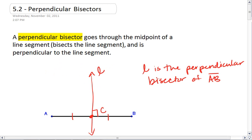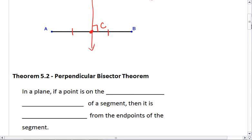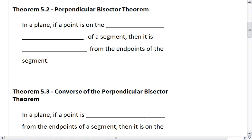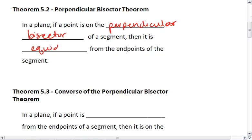This brings us to theorem 5.2, the perpendicular bisector theorem. And that tells us that in a plane, so if we're on a flat surface, if a point is on the perpendicular bisector of a segment, then it is equidistant.